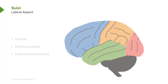Staying on the lateral aspect, next we should identify three major sulci. The first is the central sulcus, which separates the frontal lobe from the parietal lobe to the right of the central sulcus.